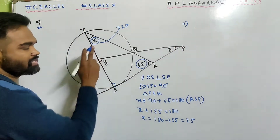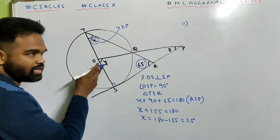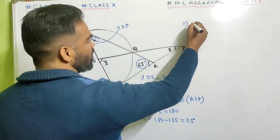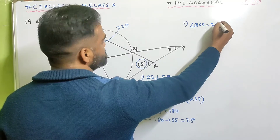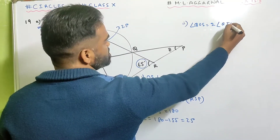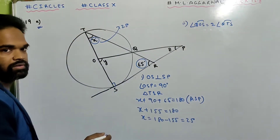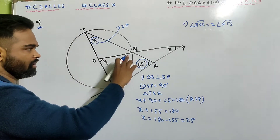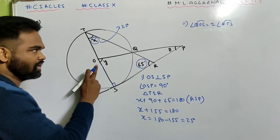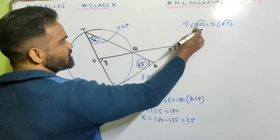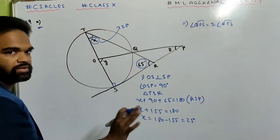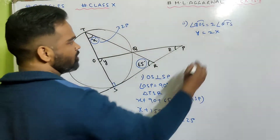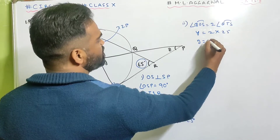Y and X have a relation. Angle at the center is twice the angle at circumference. Angle QOS will be twice angle QTS — same segment. So angle QOS is Y and this equals 2 times QTS, which is X. X is 25, so Y is 50 degrees. Done.